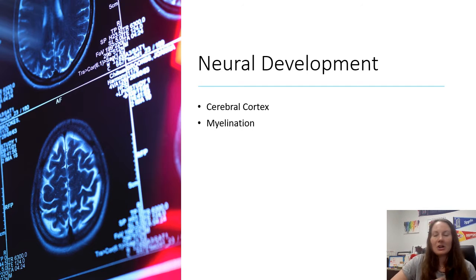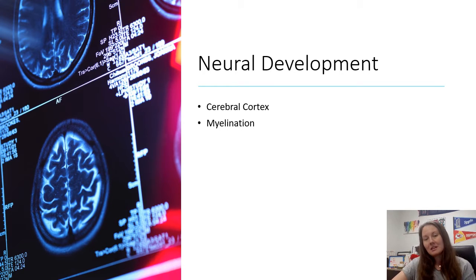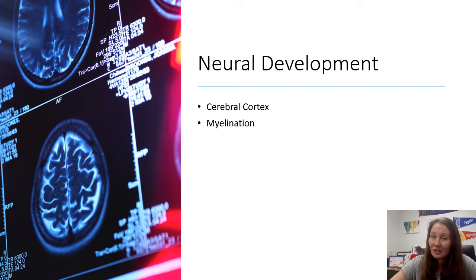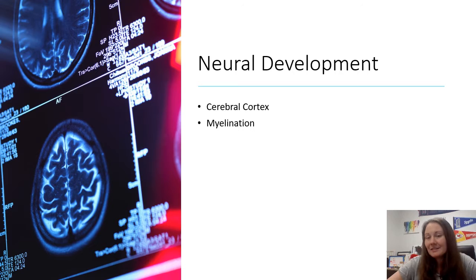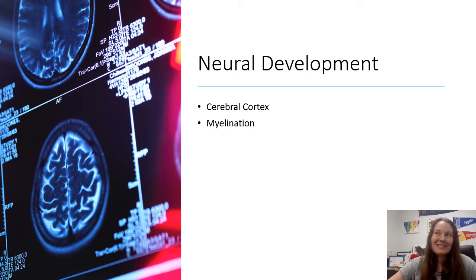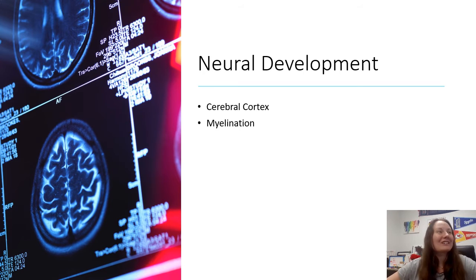Myelination keeps occurring in our brain up into the mid-20s — everyone's brain myelinates at different rates. The myelination really isn't finished in the frontal lobes, which is the area related to emotional regulation and planning tasks, until the mid-20s. So if you're in my class and your frontal lobe isn't fully myelinated, nobody would ever have any trouble with procrastination or time management — right? The sarcasm is intentional.